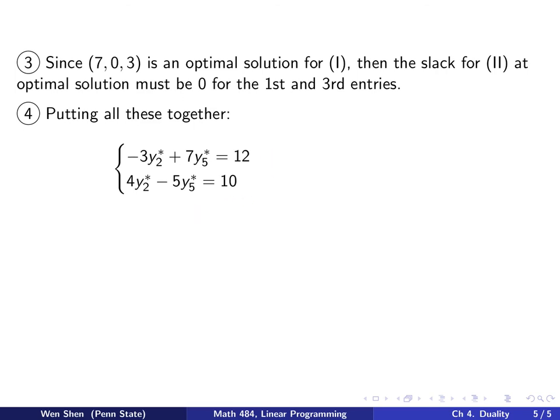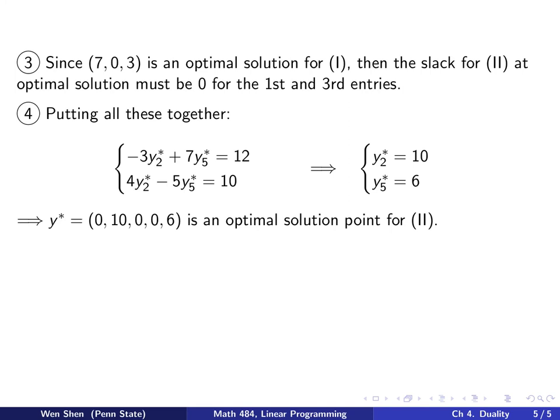Putting it all together, we write out the first and third dual constraints as equalities containing only y2* and y5*. This gives a system of two linear equations with two unknowns, which is straightforward to solve. Using your preferred method, the solution is y2*=10 and y5*=6. Therefore, the optimal solution for the dual is y-star = (0, 10, 0, 0, 6).